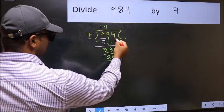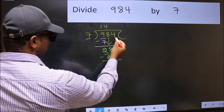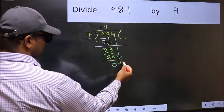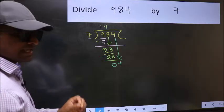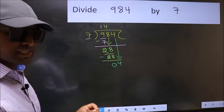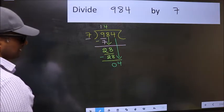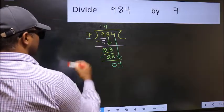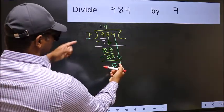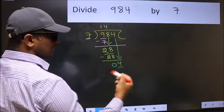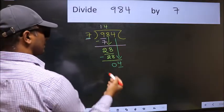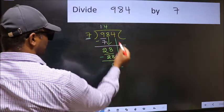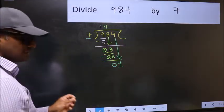After this, bring down the beside number. So 4 down. After this step, the mistake happens. And the mistake is this. Here we have 4 and here 7. 4 is smaller than 7. So what many do is, they directly put dot and take 0.